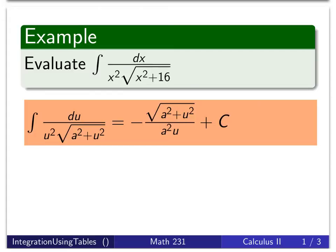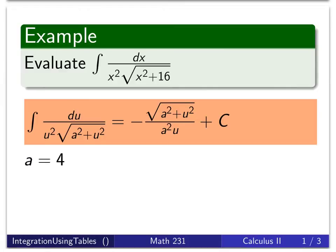Different order. It's also a different variable because sometimes you might have to make an initial substitution in order to get it into the proper form. But we're okay. Our x is just like their u. So all we have to do is identify what the value of a is, and since we have a squared and 16, a must be equal to 4.